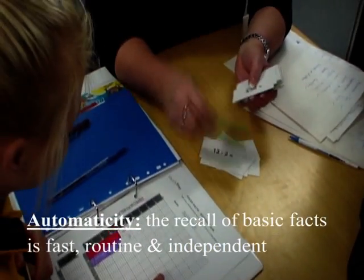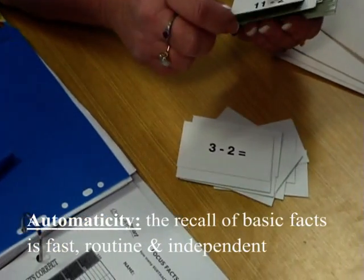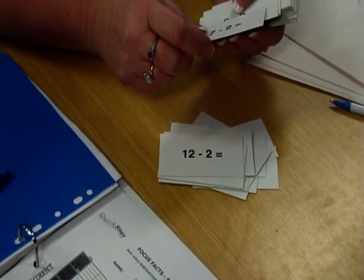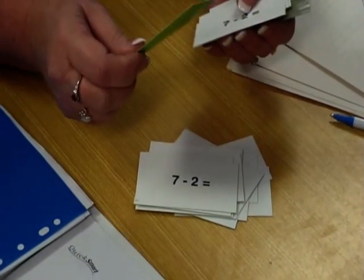QuickSmart was designed to help students with their automaticity of basic maths facts. This means that a student is able to answer a simple maths question like two sixes within two seconds.